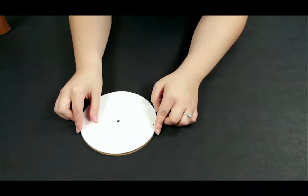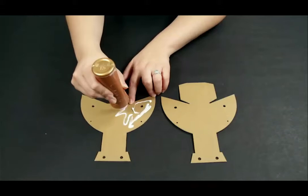Step 1: Glue both part G's together, making sure to line up the holes. Clamp or place under a heavy book.